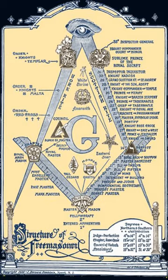The United Grand Lodge of England, which has no direct authority over other Grand Lodges, but as the world's oldest Grand Lodge, has a historical influence in terms of regularity and practice. It defines pure ancient Freemasonry as consisting of the three degrees of Entered Apprentice, Fellowcraft, and Master Mason, including the Supreme Order of the Holy Royal Arch. The degree of the Holy Royal Arch is of great antiquity and has a special importance in many Masonic systems.